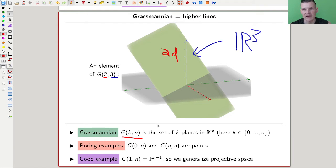So higher lines, I call them higher lines. The boring examples are: zero and n are points. The set of n-planes in n-space, there's only one. And the set of zero planes (points in n-space), where planes are meant in the sense of linear algebra including the origin, there are not many points. So the boring examples are those.